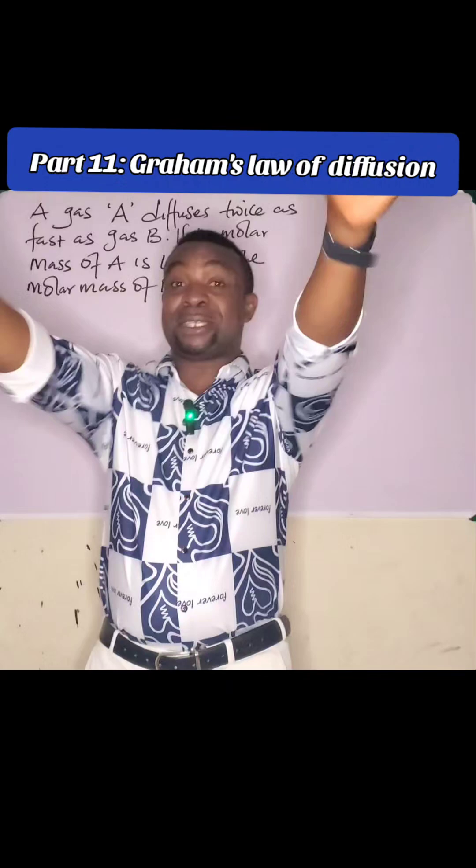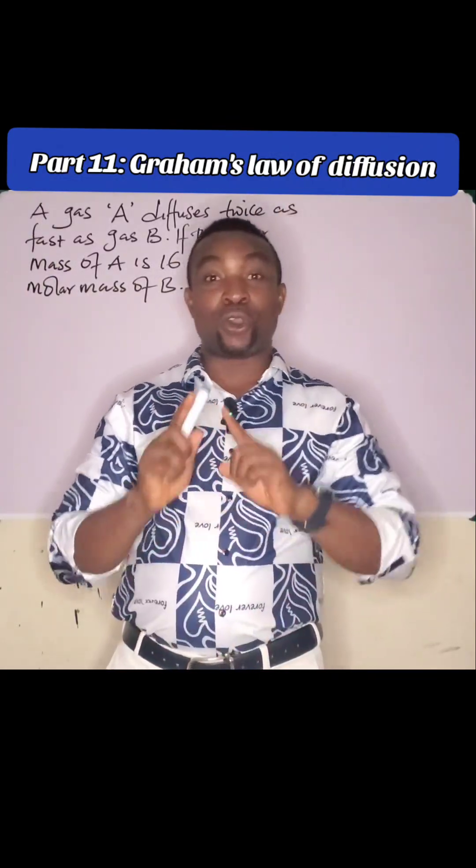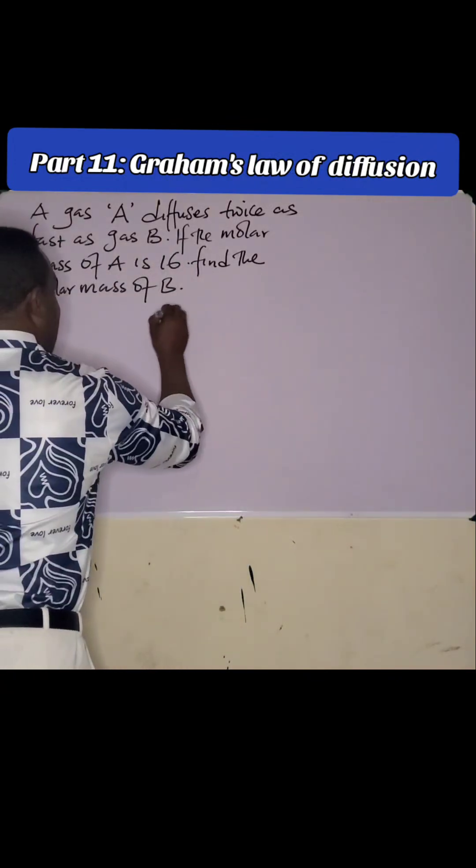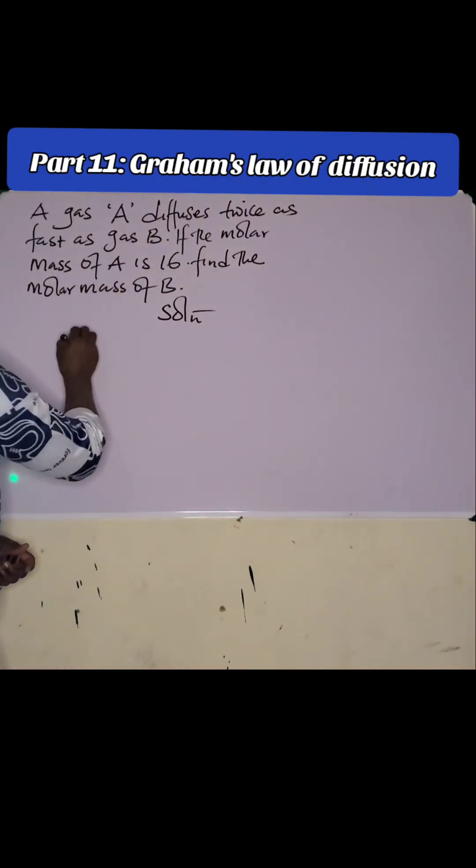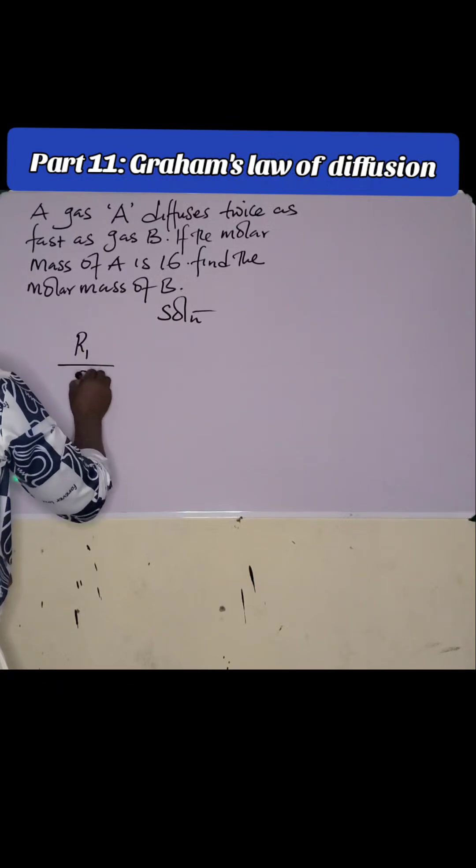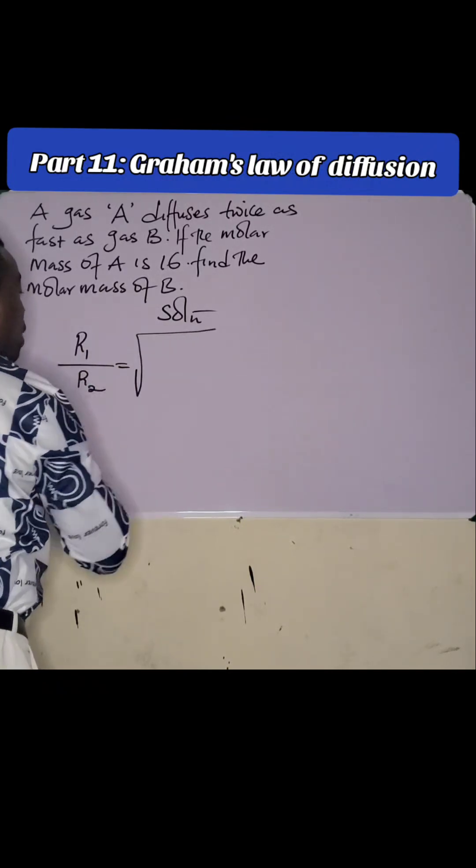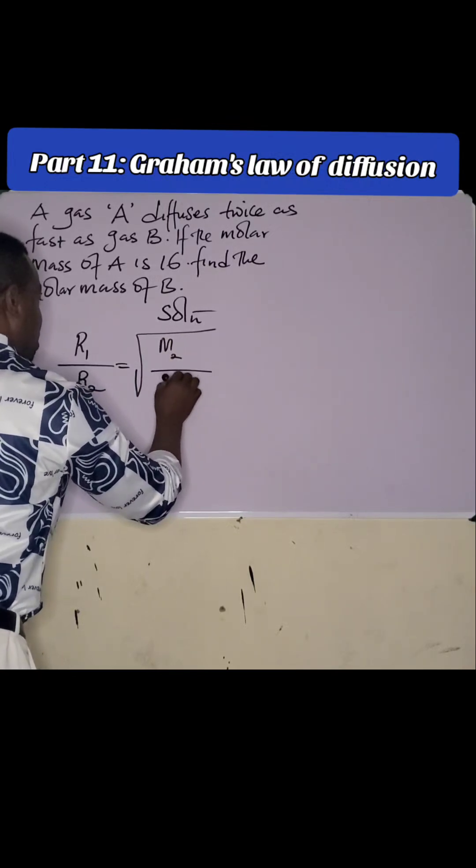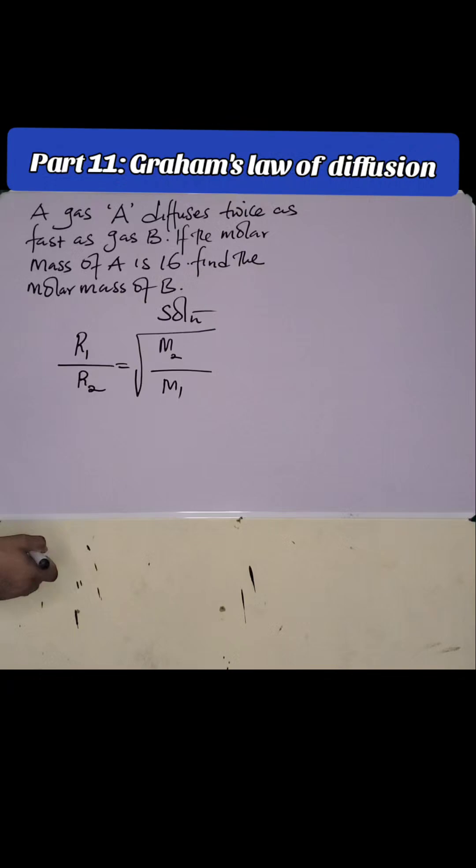This is part 2 of Graham's Law of Diffusion. Remember that Graham's Law of Diffusion, R1 over R2 is equal to square root of the relative molecular mass of this over this. This is the equation for Graham's Law.